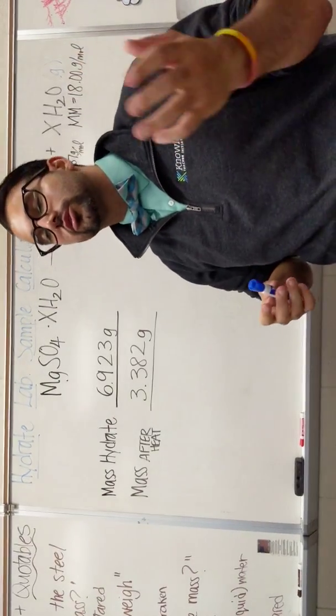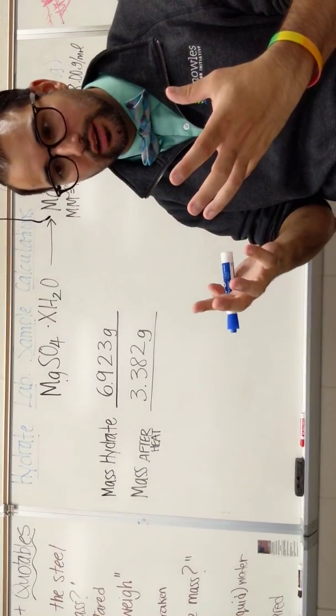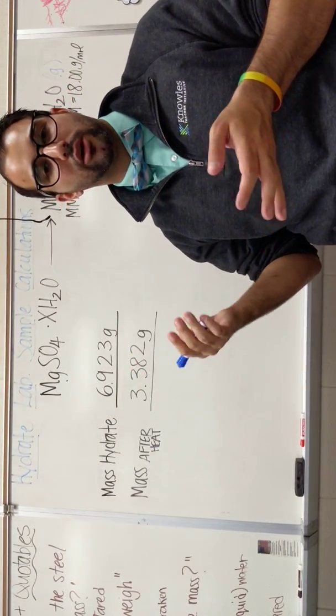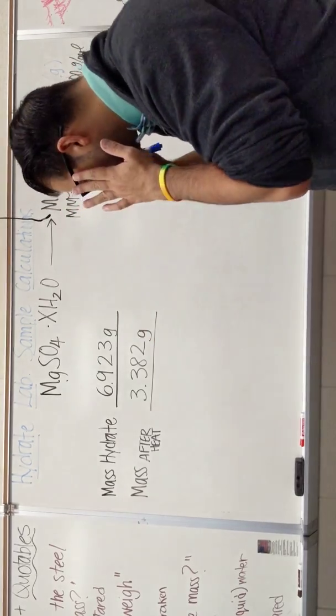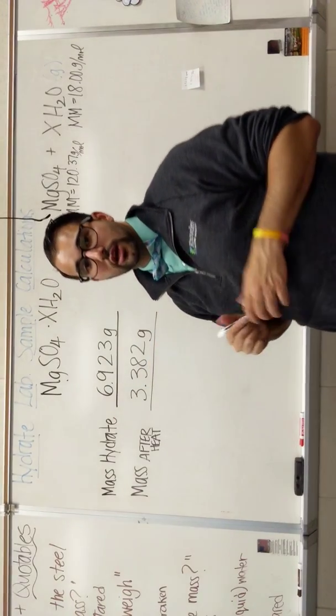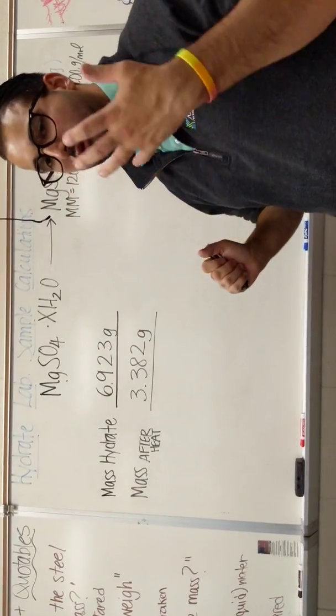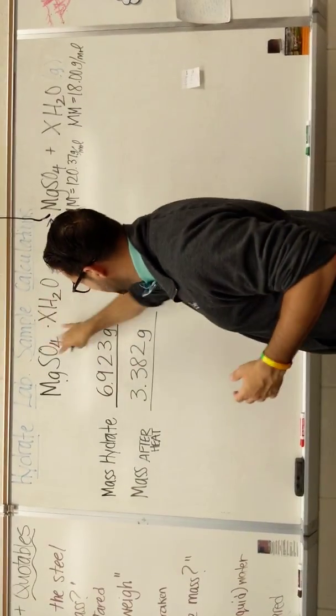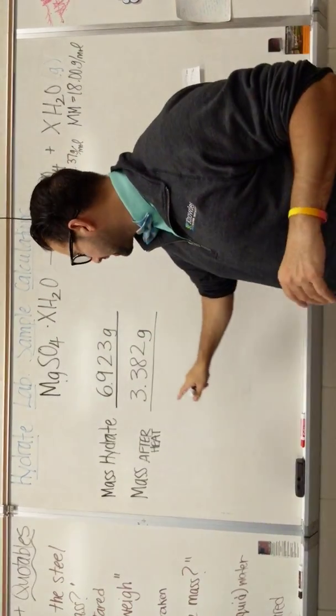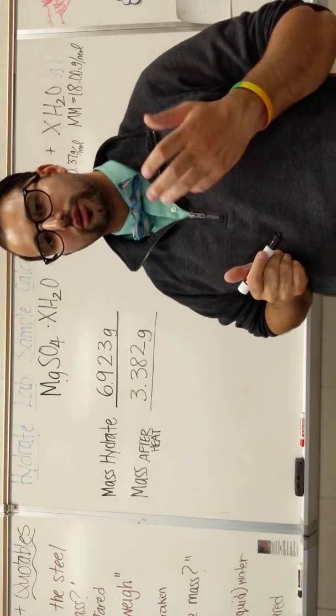So what you did was you took the mass of the entire hydrate, and then you heated it up a couple of times, and then you got the mass after of something we call the anhydrate. So I have some sample data for us to look at. Let's say the mass of my entire hydrate was 6.923 grams. That's this whole thing, and I don't know how many water molecules are on there. Then after I heat it, I get a mass of 3.382 grams.